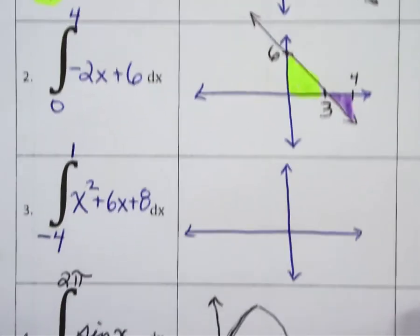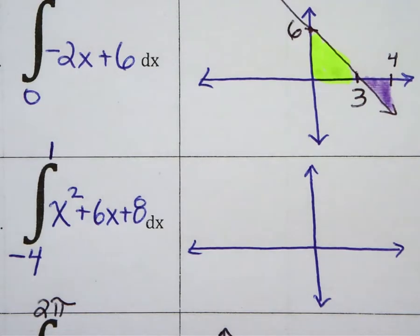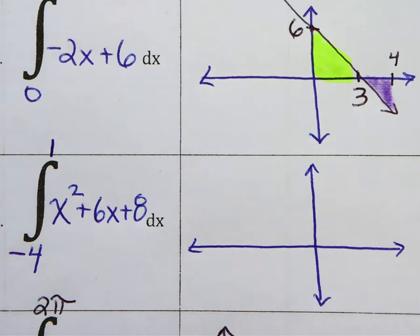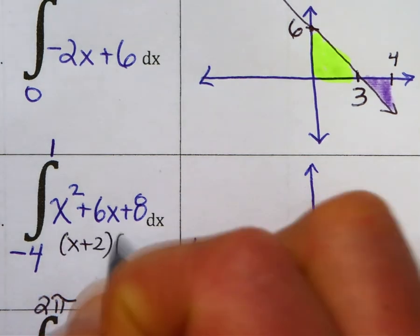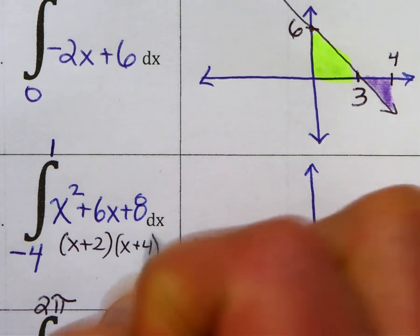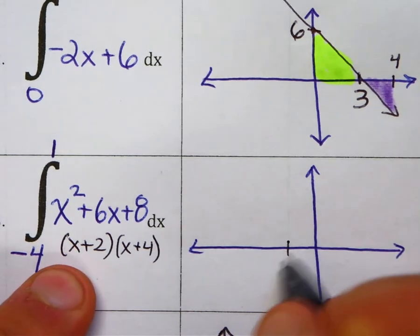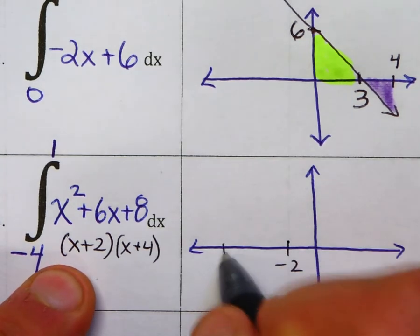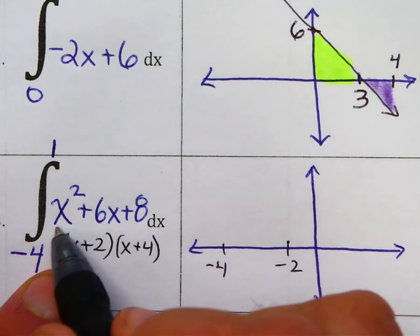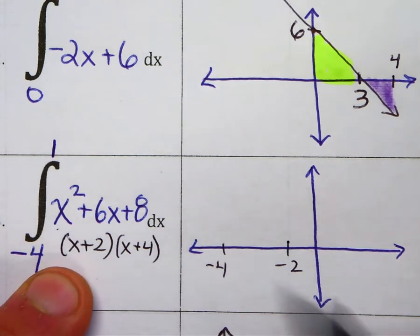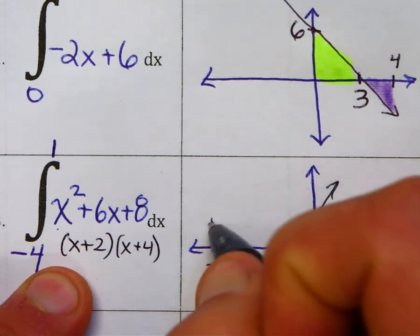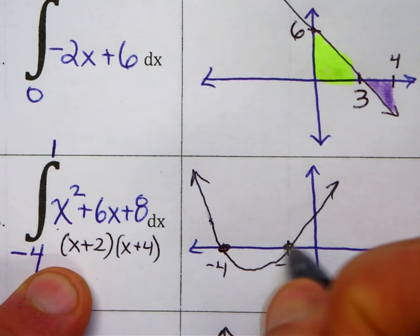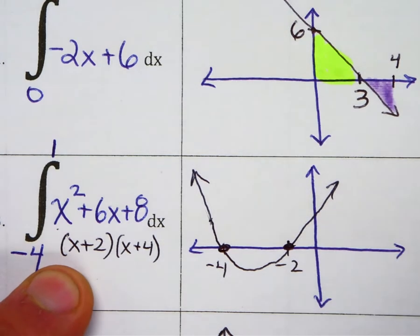Let's do that again with a parabola here. Now this is factorable, x plus two, x plus four, which means that the roots are at negative two and at negative four. And since the coefficient of x squared is positive, it's a happy face. And this graph is not to scale. It's just a sketch to give me a picture of what's going on here.